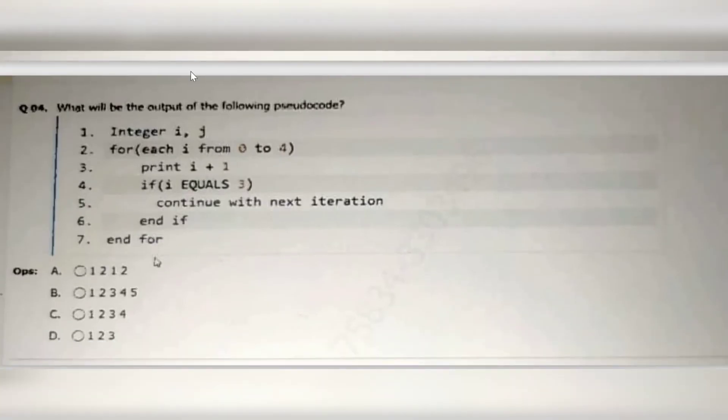Then next question integer I, J. For each I from 0 to 4 means I value will be iterated from 0 to 4. First I is 0 equal to 0. Print I plus 1, first one will be printed. Here if I equals to 3 it is not true. Then next iteration I becomes 1. Print I plus 1 that is 2. Then it is not evaluated. Then I becomes 2. Print 3. Then I becomes 3. Print 4.